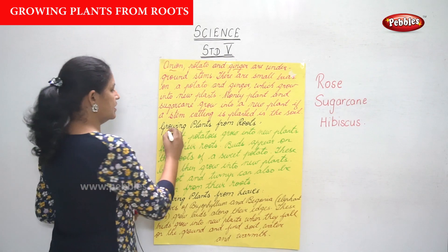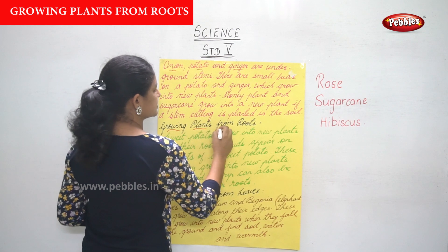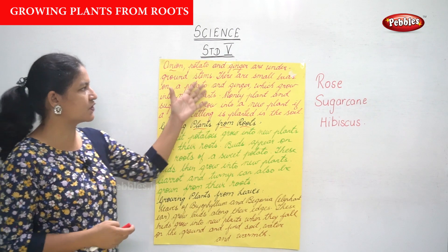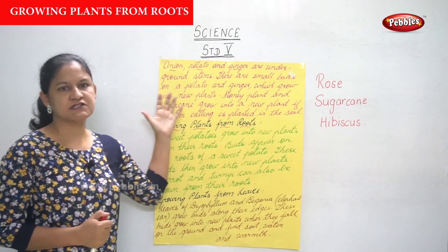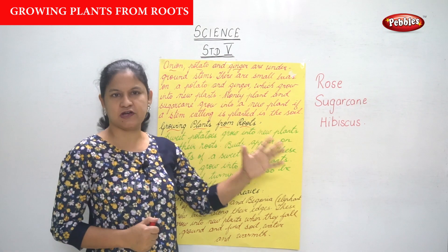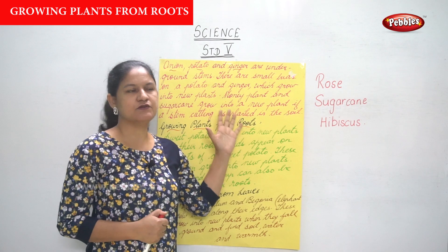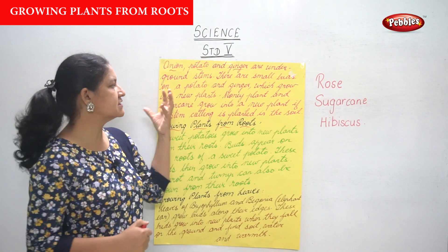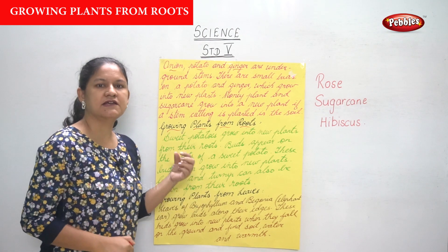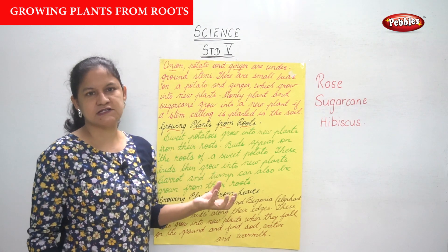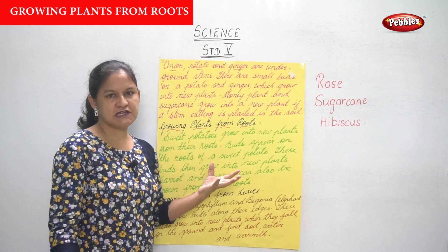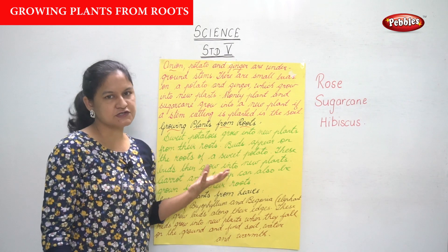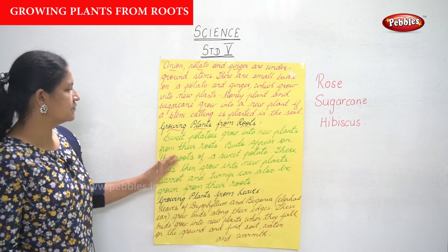Moving on — we've seen growing plants from stems, with examples being rose, hibiscus, and sugarcane, then potato, ginger, and onion which are underground stems. There are small buds that appear on the potato and ginger that later grow into a new plant.